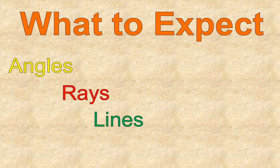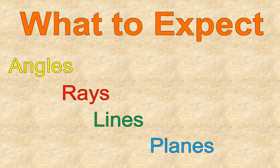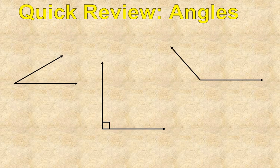We will be talking about angles, rays, lines, and planes. There's not much hidden in here. We're going to do a review of angles we talked about in our previous lesson. We'll add to that, and then we will talk about the vocabulary of rays, lines, and planes.